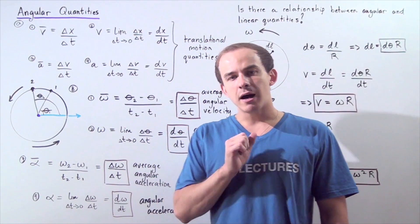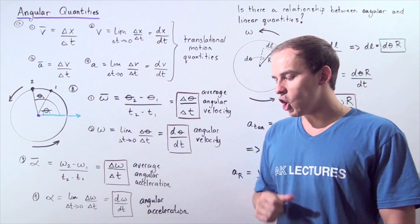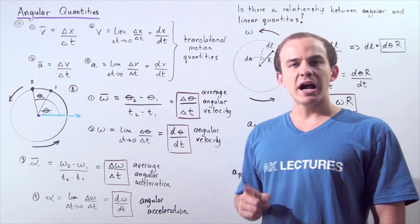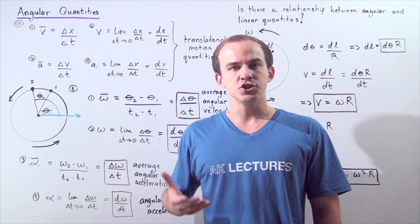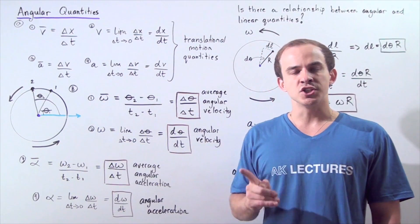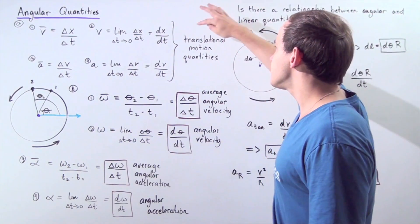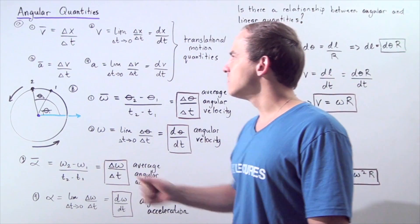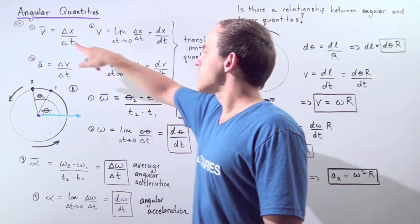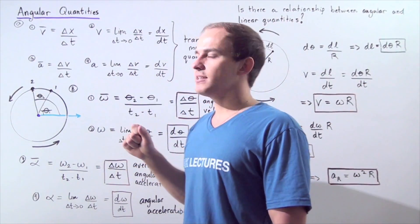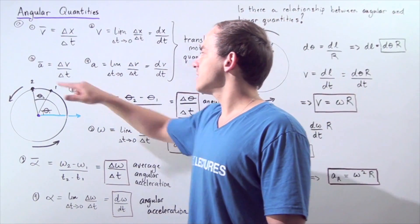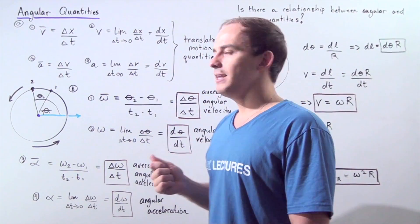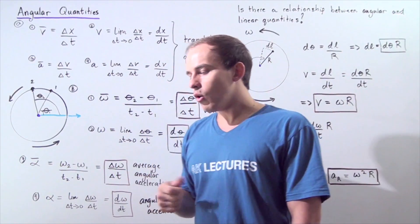Recall that when we spoke about objects undergoing translational motion, we said that we can describe such objects using certain physical quantities known as translational or linear motion quantities. Some examples include average velocity, instantaneous velocity, average acceleration, and instantaneous linear acceleration.